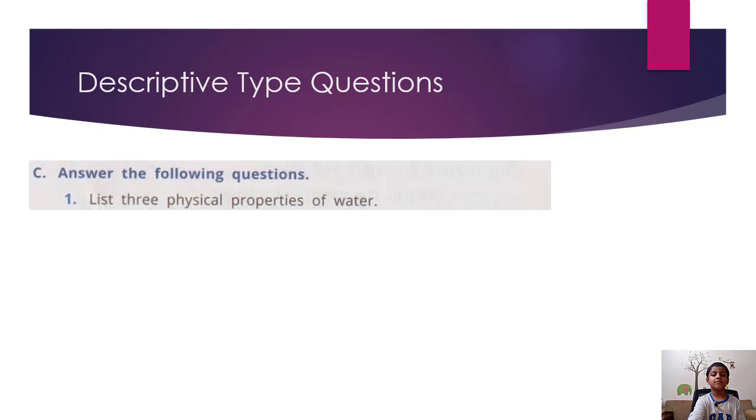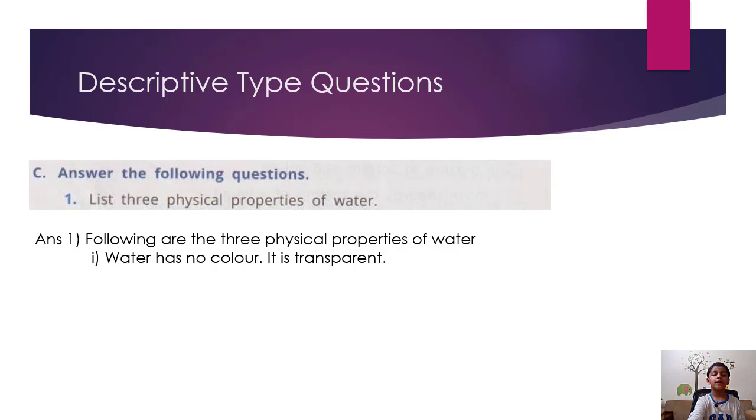Answer the following questions. List the three physical properties of water. Following are the three physical properties of water: Water has no color, it is transparent. Water is odorless and tasteless. Water flows from one place to another.